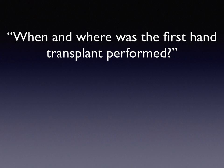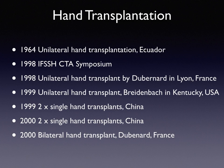The first hand transplant was performed in Ecuador in 1964, but without immunosuppression it only lasted about two weeks. In the late 1990s, an International Federation for Society of Surgery hand-sponsored Composite Tissue Allotransplantation Symposium was held. That same year, a unilateral hand transplant was undertaken in Lyon, France. Another was undertaken the following year by Breidenbach in Kentucky, USA.